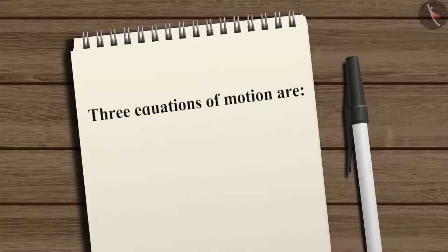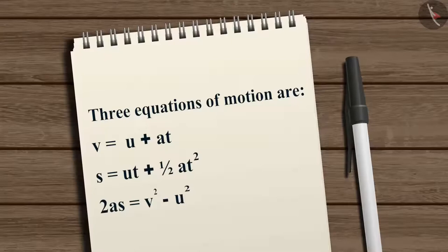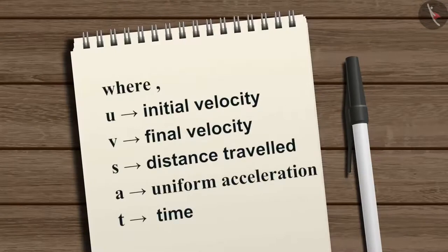The three equations of motion are: V equals U plus AT; S equals UT plus one-half AT squared; and 2AS equals V squared minus U squared. Where U is initial velocity, V is final velocity, S is the distance traveled, A is the uniform acceleration, and T is time.